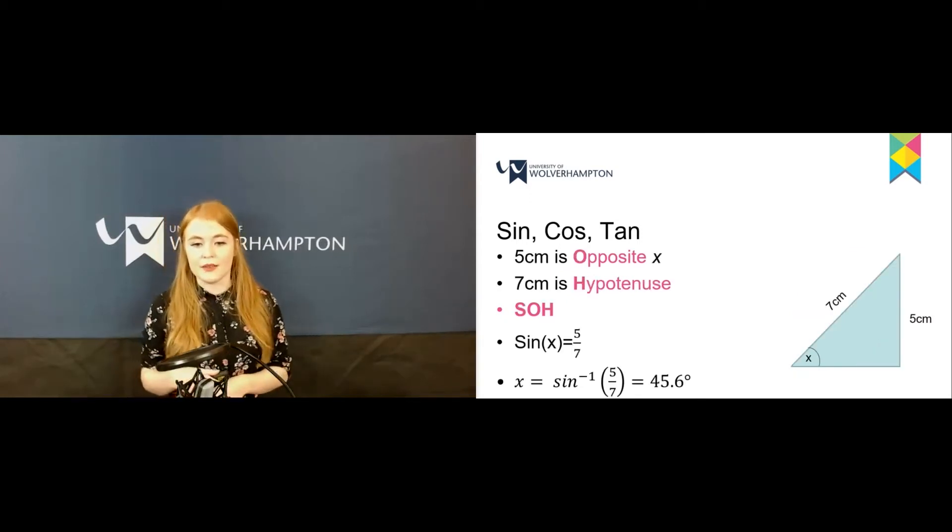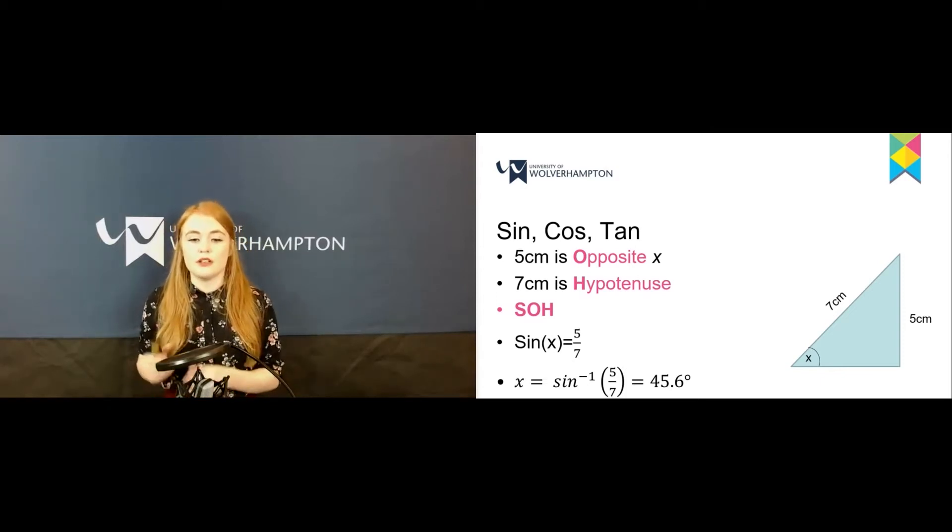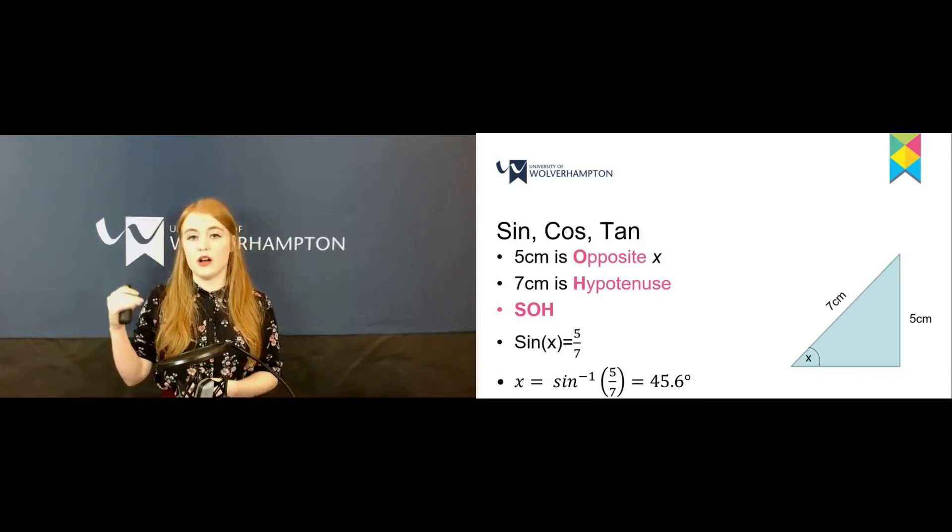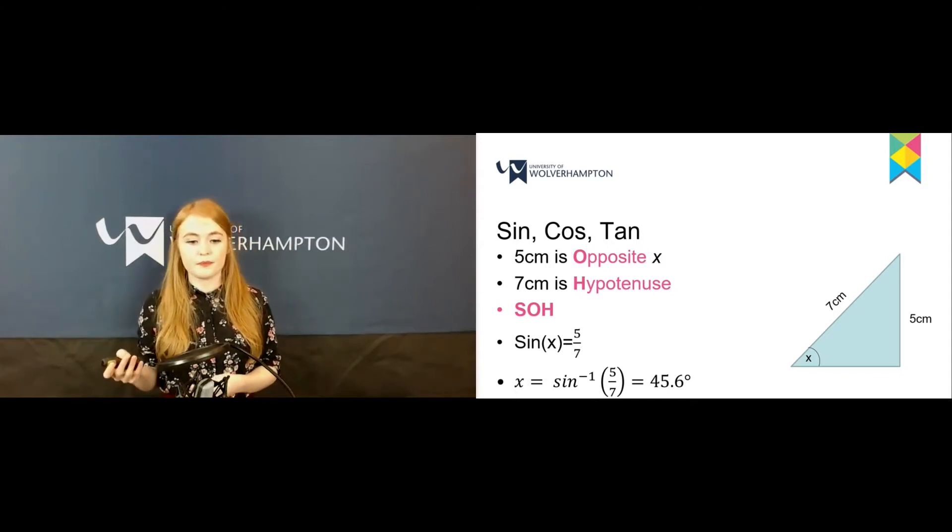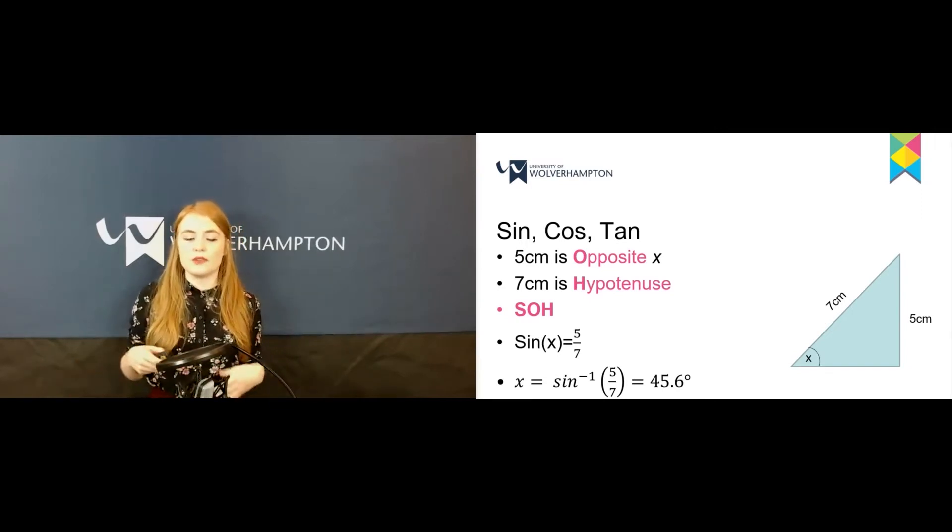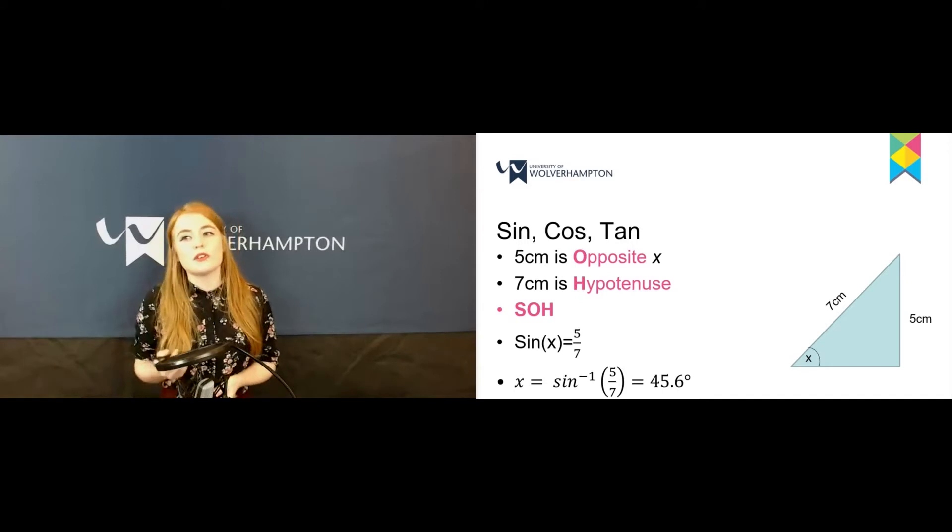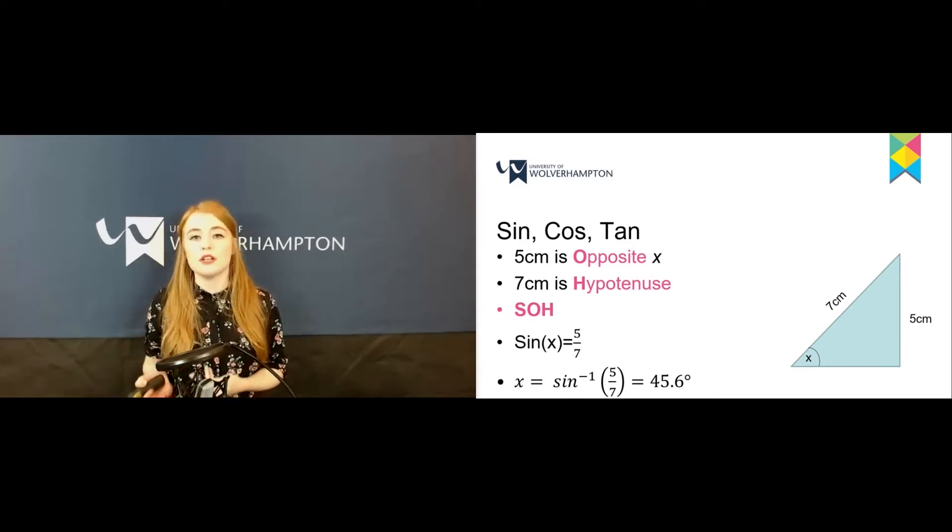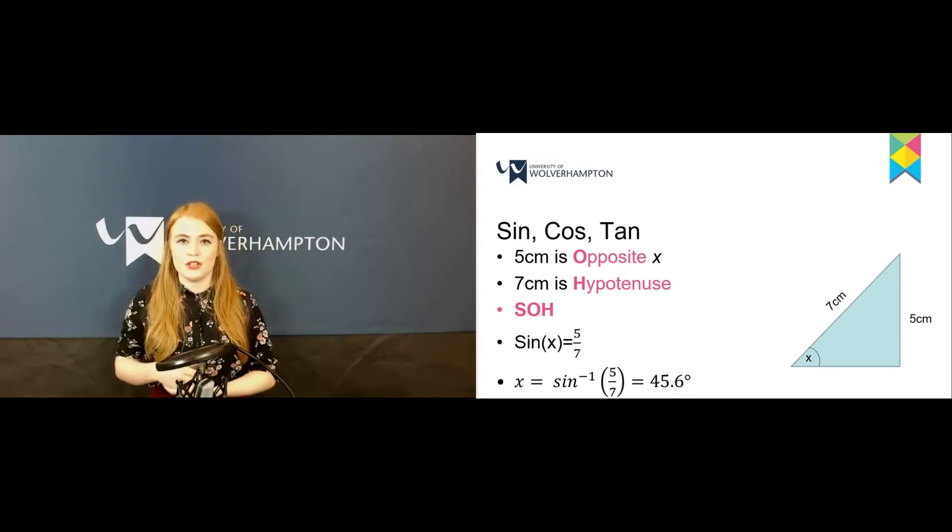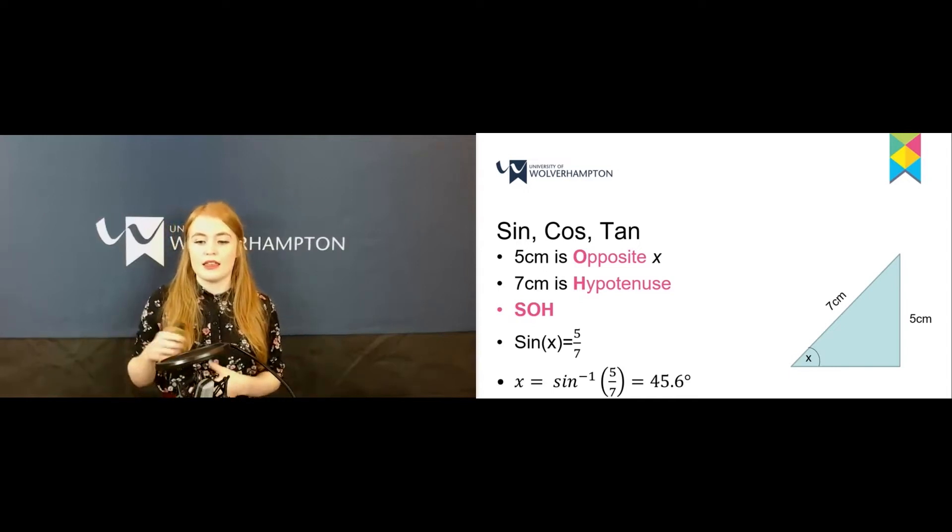How about this one? We're given the opposite and the hypotenuse, O and H, so we're going to use sine. We know sin(x) = 5/7, opposite over hypotenuse. To undo and get the x, we need to use the inverse. On your calculator there should be a button for sine to the power of minus 1. That's the button you need to find the angle.